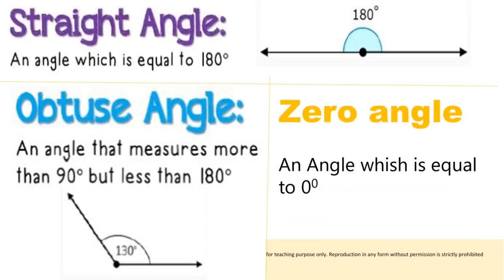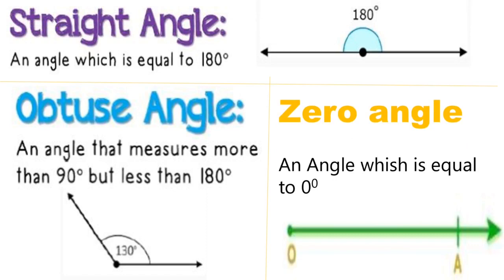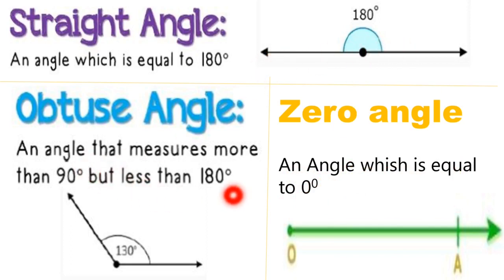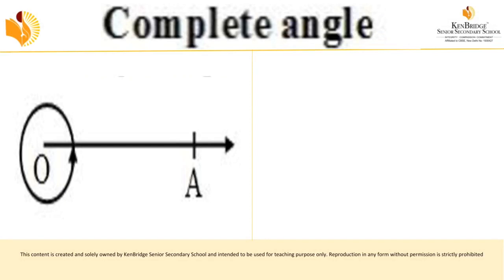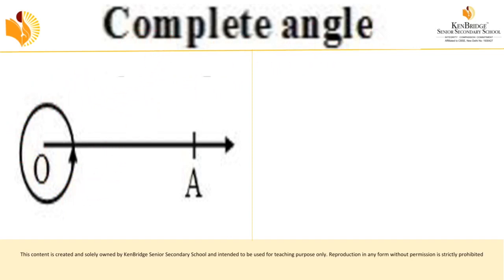A zero angle is an angle equal to zero degrees — it has only one arm instead of two, because both arms coincide. A complete angle is an angle equal to 360 degrees, representing a full rotation. The complete rotation is called a complete angle.